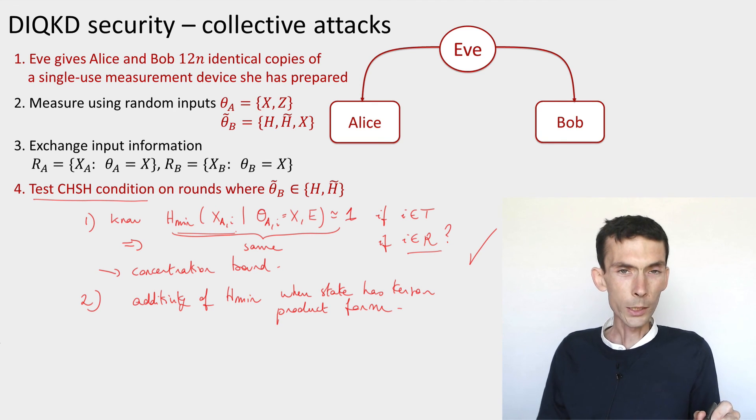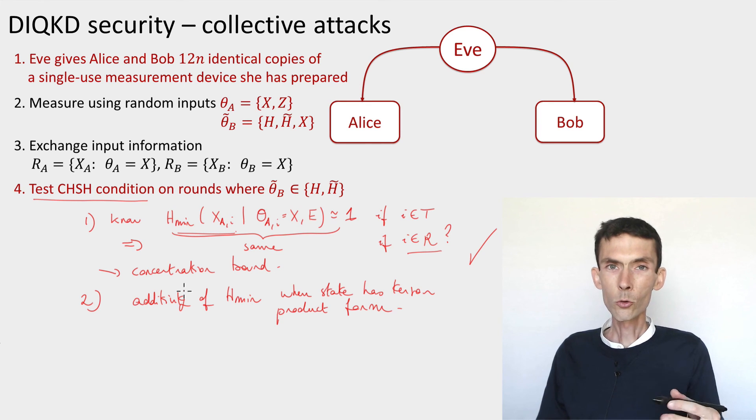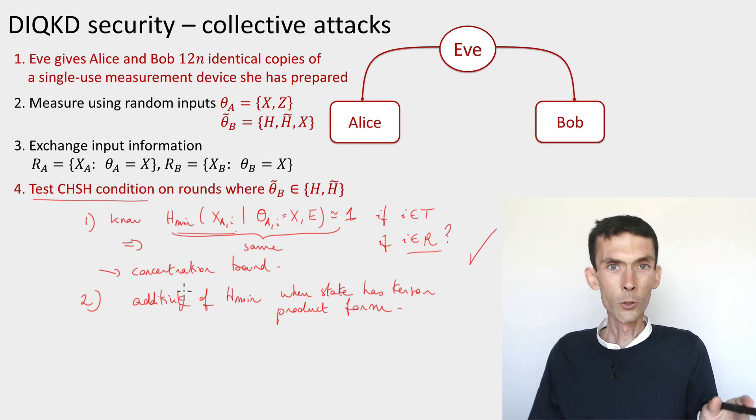The second one is more tricky, and we'll talk about later. Because this additivity, when you don't have states of a tensor product form, fails completely and you have to use much more elaborate tools in order to be able to complete your analysis. We'll see that later, but for now, we've proven security of device-independent QKD against collective attacks, which is already quite a significant achievement.